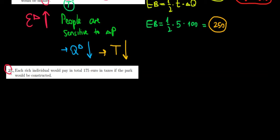Let's have a look at question 35 now. Each rich individual would pay in total 175 euros in taxes if the park would be constructed. Now what we know about the rich people here is that they pay two taxes.